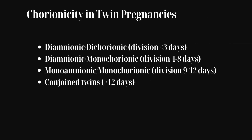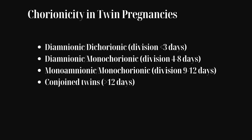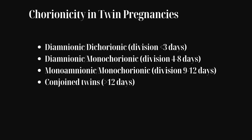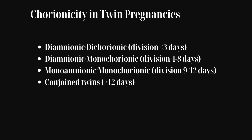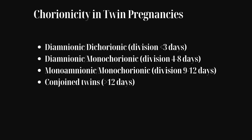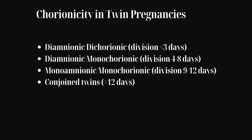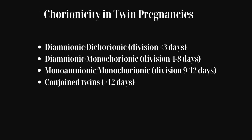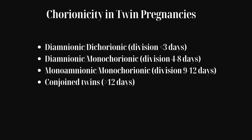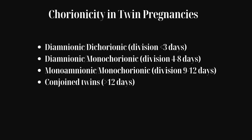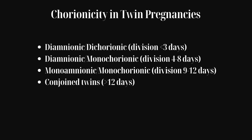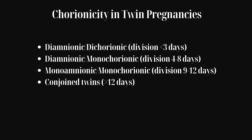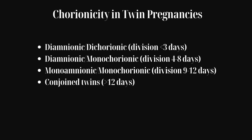Chorionicity refers to the type of placental arrangement in twin pregnancies and plays a critical role in determining pregnancy outcomes and management. If the fertilized egg splits within three days, the result is diamniotic dichorionic twins, meaning each fetus has its own placenta and membranes. If the split occurs between four to eight days, the twins share a single placenta.